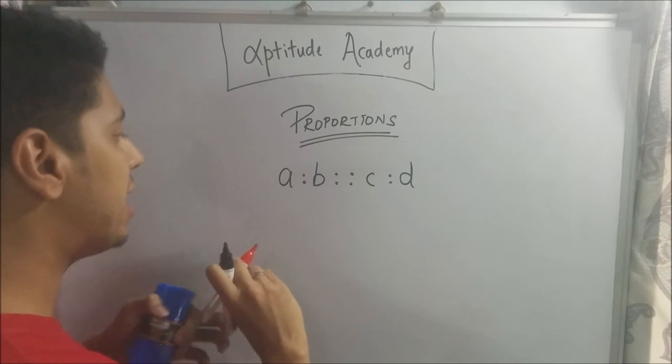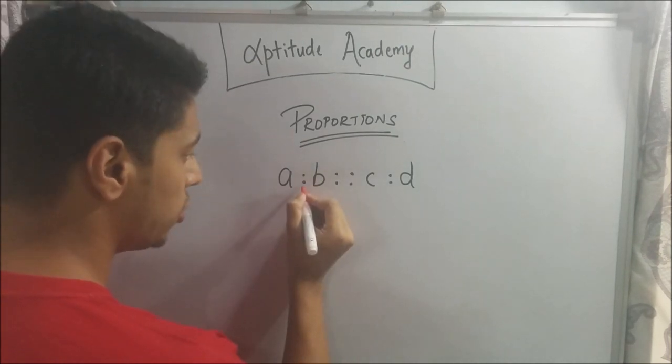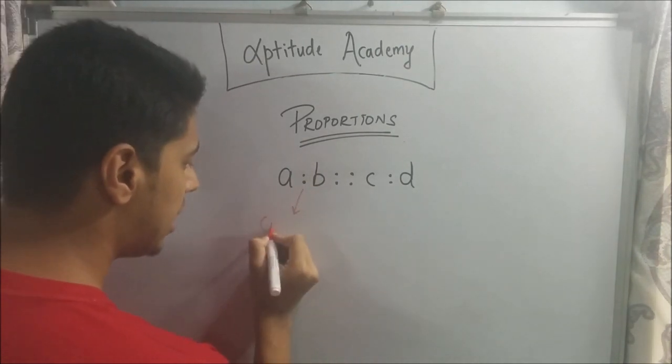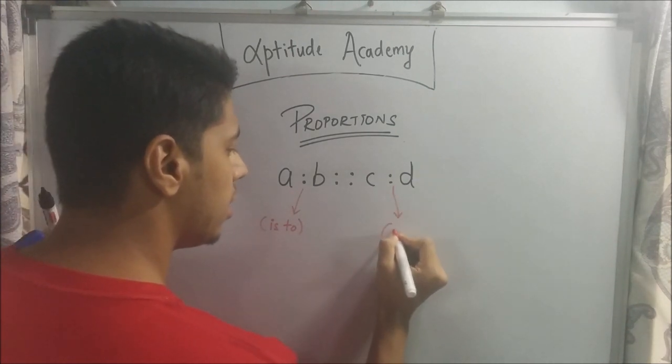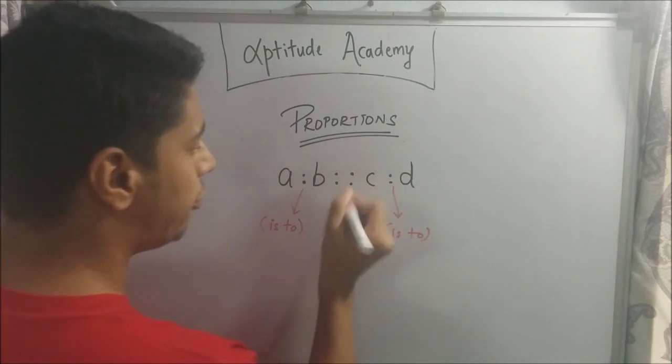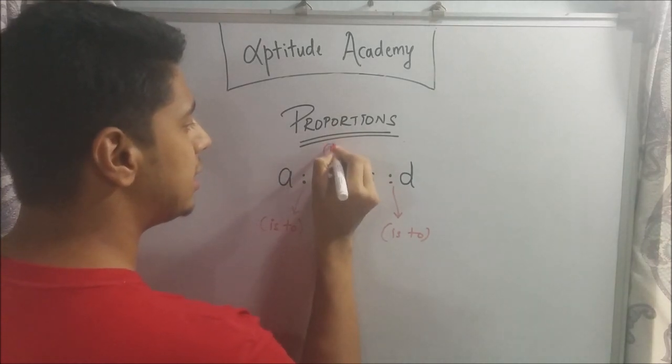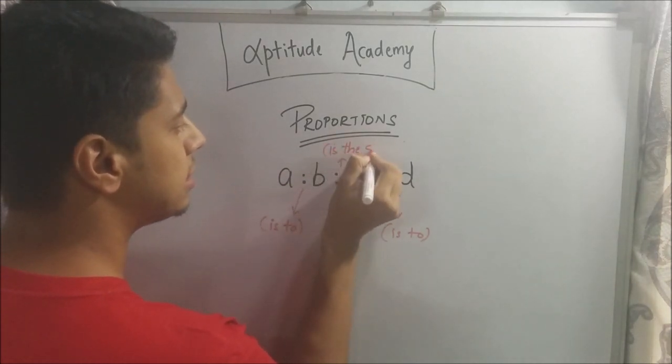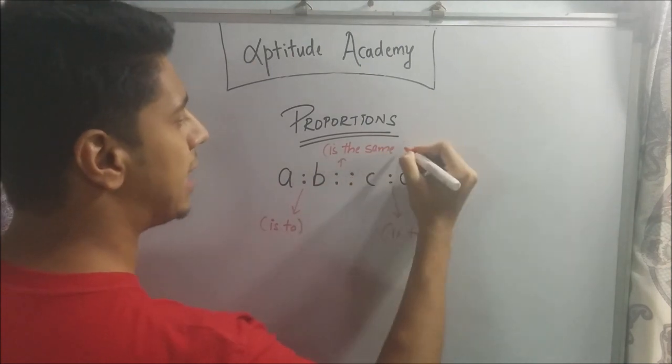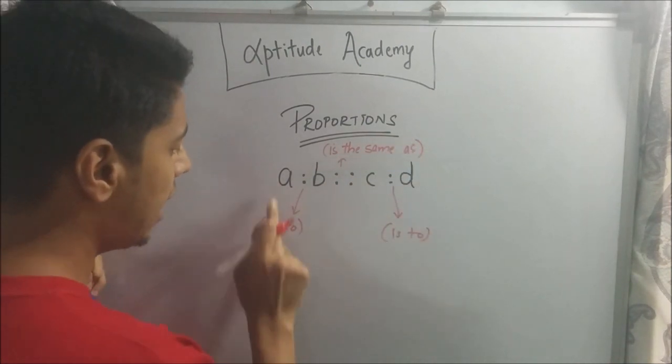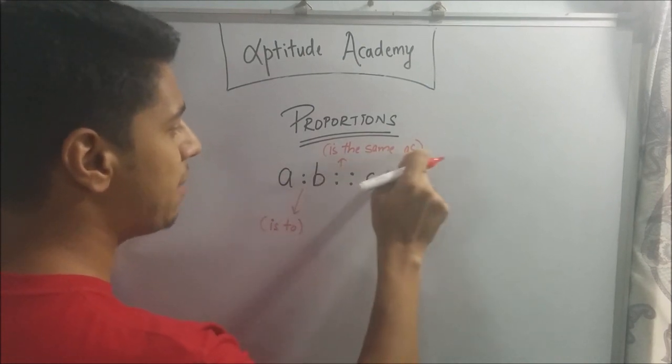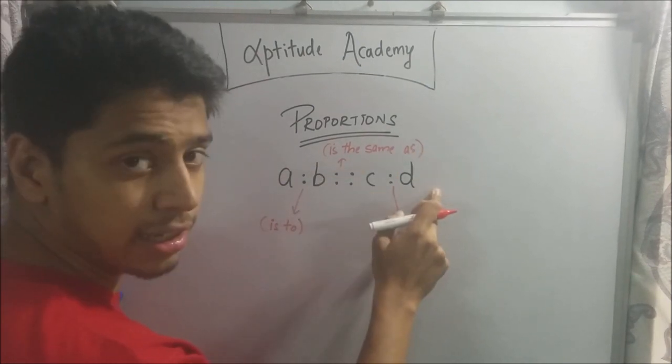Now, how I remember it is two dots signify two words: 'is to'. And four dots signify four words: 'is the same as'. So, you will read it as A is to B is the same as C is to D.